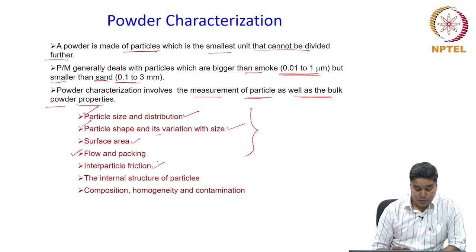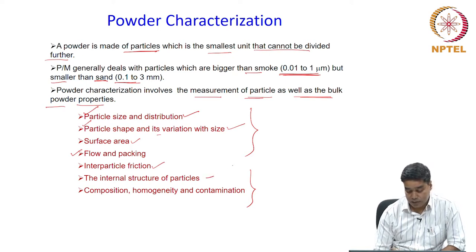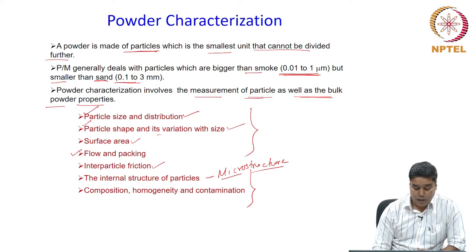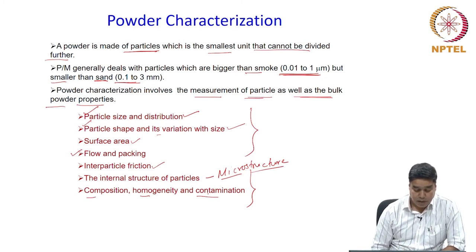You also need to know the internal structure of the particles, which is also known as the microstructure — something that we have already discussed in past several classes. Additionally, composition homogeneity and any contamination also has to be evaluated, because each of these characteristics will have their own influence on the powder metallurgy process.